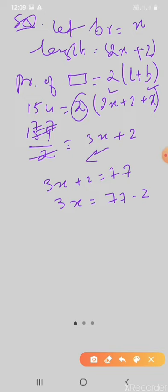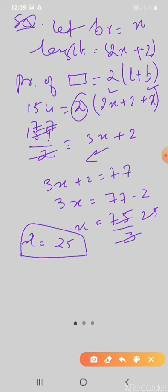75 divided by three. Three goes into 75, and x is equal to 25. So the breadth is 25 meters. Now for the length, which is two x.